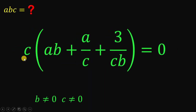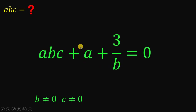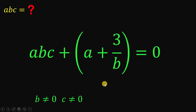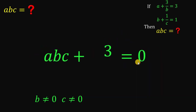On the left-hand side, distributing c gives us abc plus a plus 3 over b. Now, let's focus on the expression a plus 3 over b. From the given equations, we know that a plus 3 over b equals 3. Therefore, we can replace that whole expression with just 3.